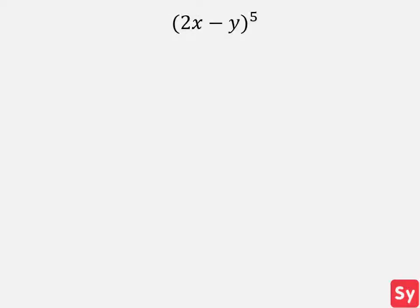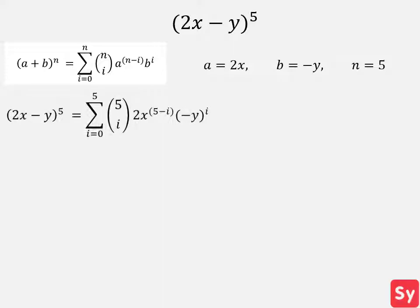Next example, we have 2x minus y to the 5th. Let's take a look at the formula. In this case, a equals 2x, b equals negative y, and n equals 5. Now we can plug these values back into the formula.